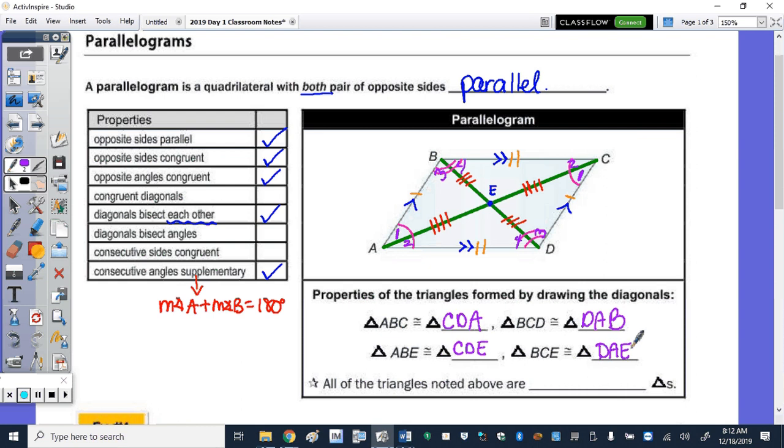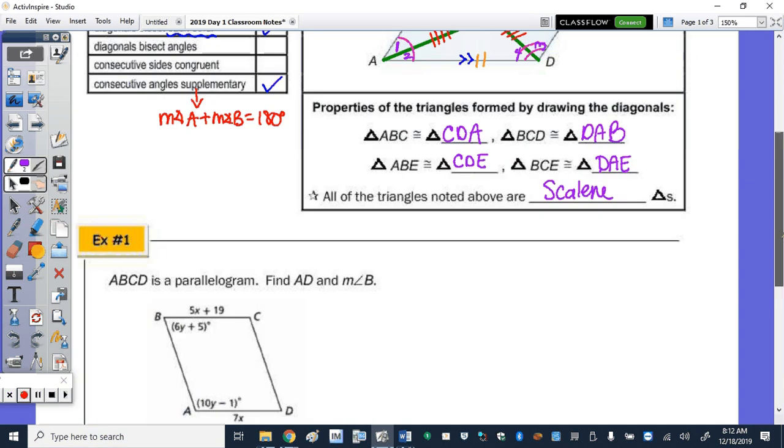All of the triangles above that we just noted are all scalene triangles. So no sides or angles are congruent. All right, now to take a look at some examples.